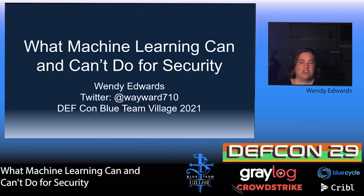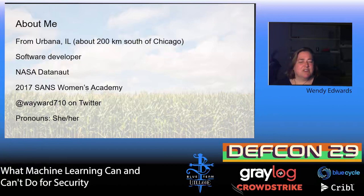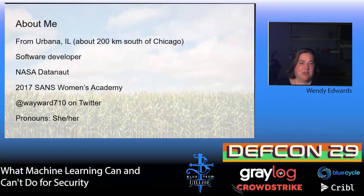Hi, this talk will be about what machine learning can and can't do for security. My name is Wendy Edwards. I'm from Urbana, Illinois, which is about 200 kilometers south of Chicago — probably most famous as the birthplace of HAL 9000 in 2001. I work as a software developer, I'm part of the NASA Datanauts, which gave me an interest in data science and machine learning. I also participated in the 2017 SAMS Women's Academy. On Twitter I am wayward710, and my pronouns are she and her.